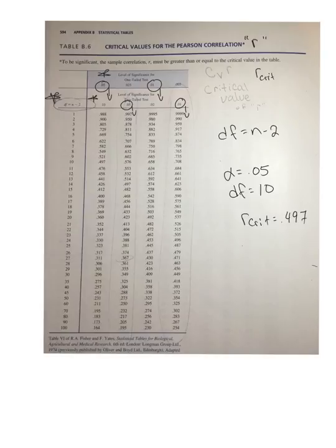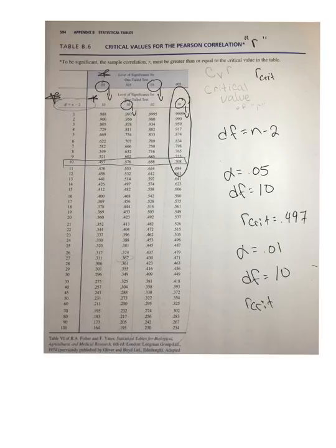But now, say I want to do an alpha set at .01, and let's make it a two-tailed test, same degrees of freedom, watch how different this is. So we'll go 10 degrees of freedom, so we want this one right here, this whole section right here. And now I want alpha .01, and I'm going to do it as a two-tailed test, so I'm going to go in this section here. So my R crit now, my critical value of R to beat, so I can reject that null hypothesis, is .708.